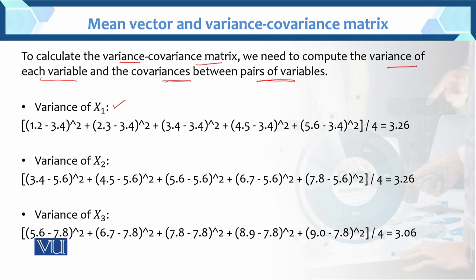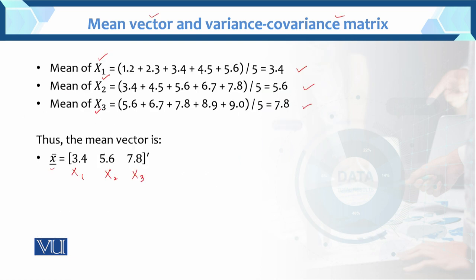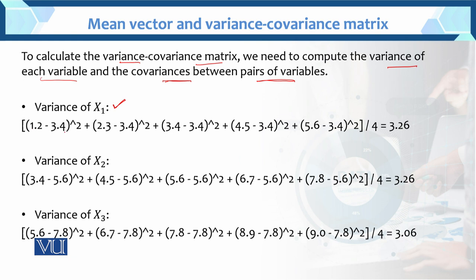First, we will find the variance of x1. The formula: each value minus its mean, squared. So: 1.2 minus 3.4, whole square; second observation minus mean, whole square; third observation minus mean, whole square — up to all observations. Divided by n minus 1, which is 4 (since total observations are 5). So variance of x1 = 3.26.